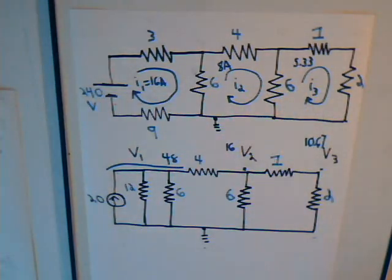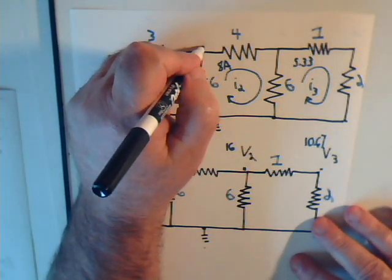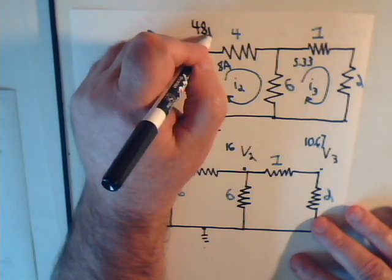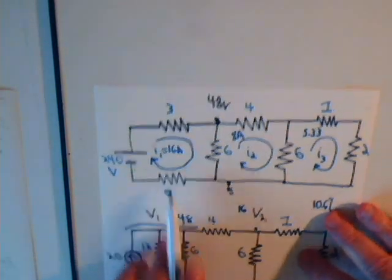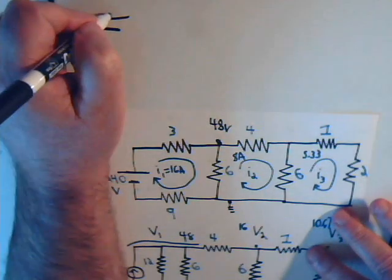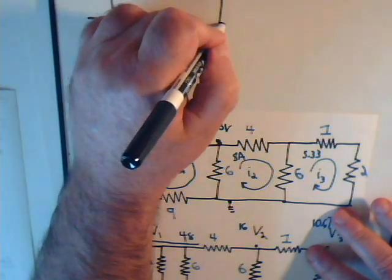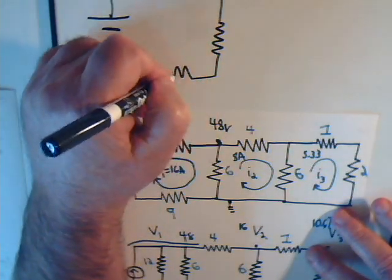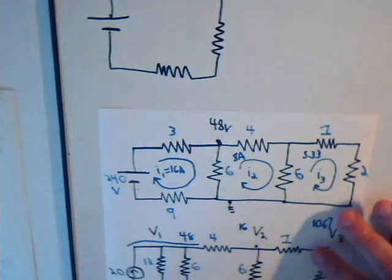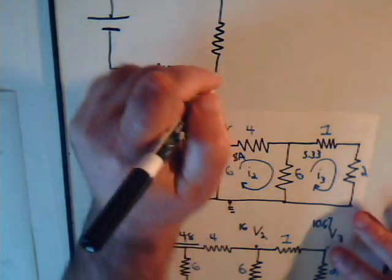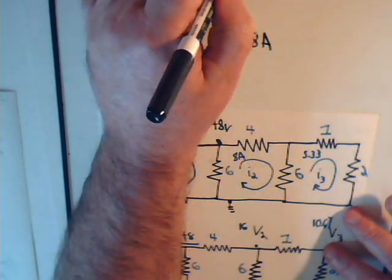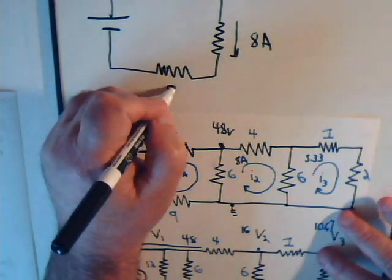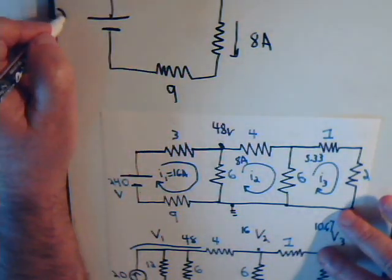Now here we don't know what the mesh currents are, pretend those aren't there. But what we do know is that at this node right here, that is at 48 volts. Let's just redraw just this part of the circuit. So here we have the battery and then the resistors like this. And we've already determined that the current in this resistor is 8 amps going down. But more important, we know that's at 48 volts. And this is 9 ohms, this is 3 ohms, that's at 240 volts.